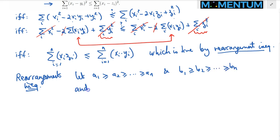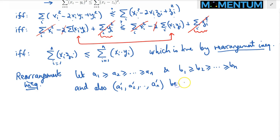And also, this is important, we have a permutation, a sub 1 prime, a sub 2 prime, and so on, a sub n prime, be a permutation of the sequence a sub i's. So a sub 1, all the way up to a sub n.